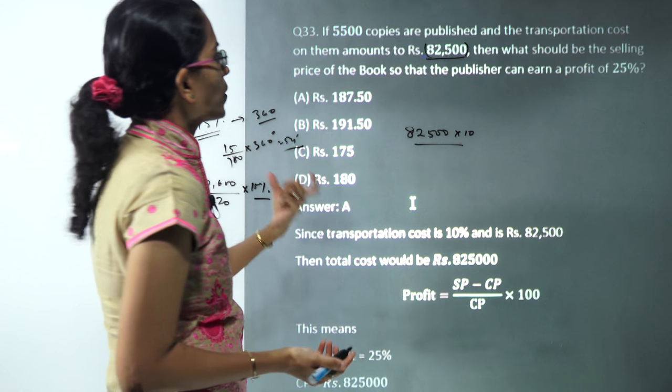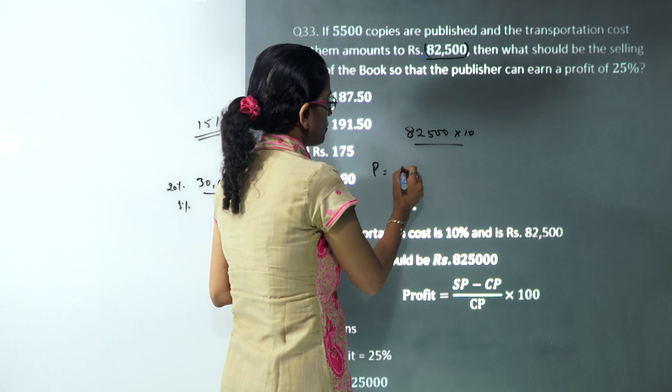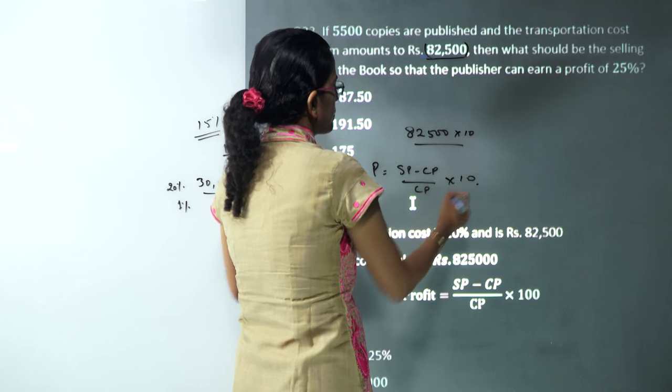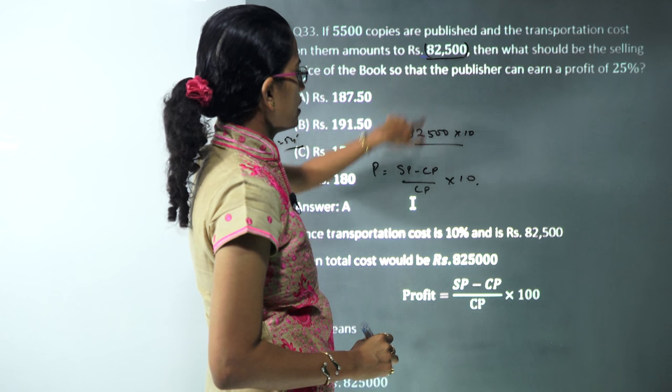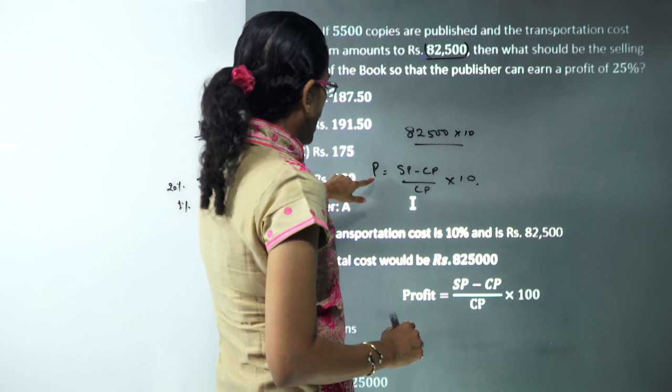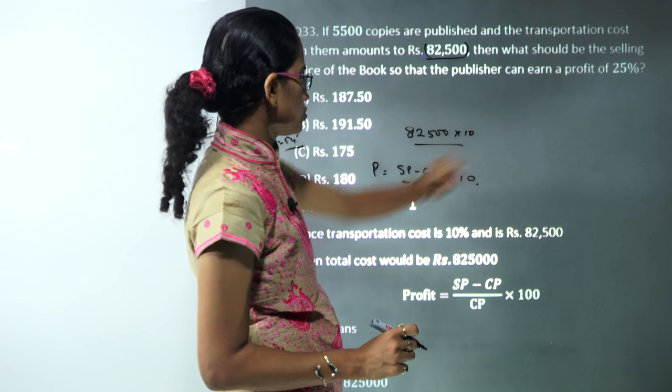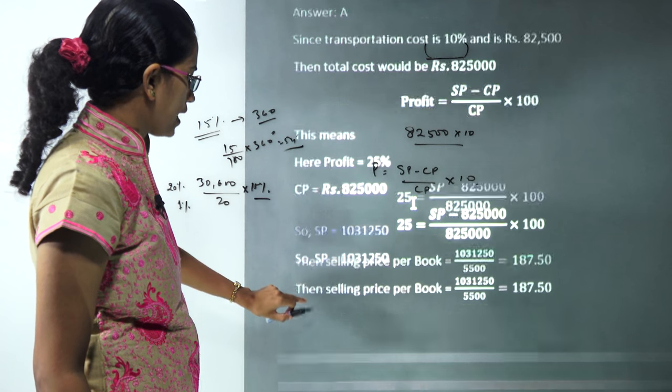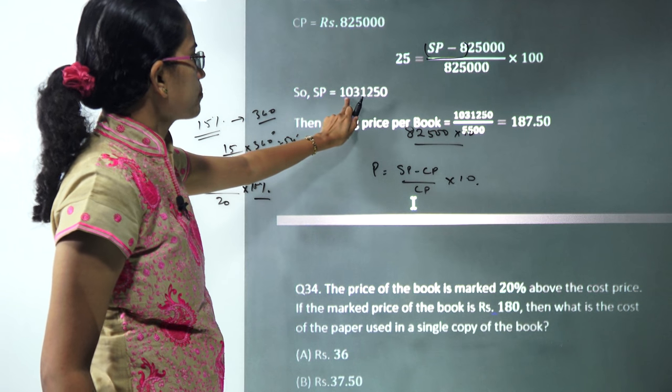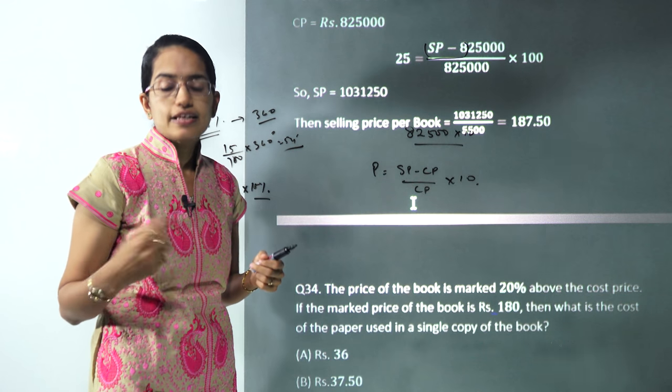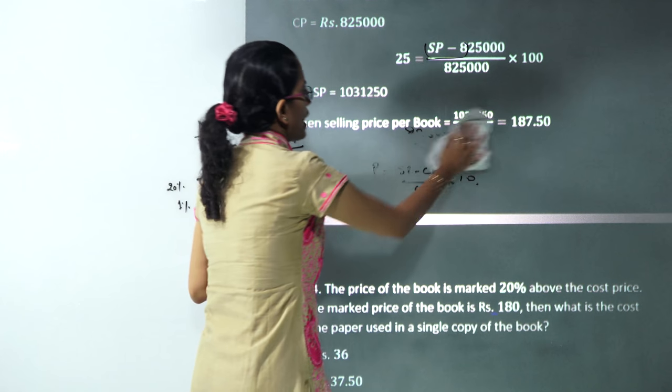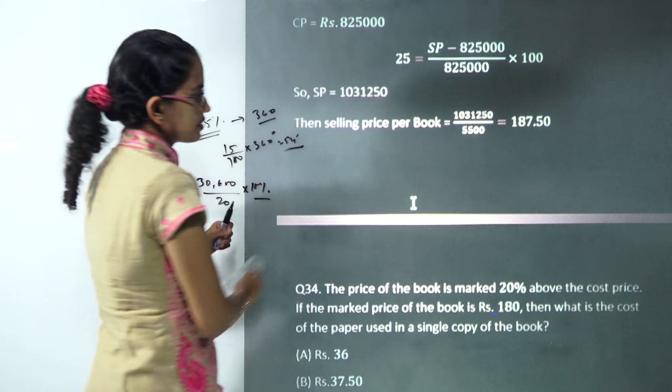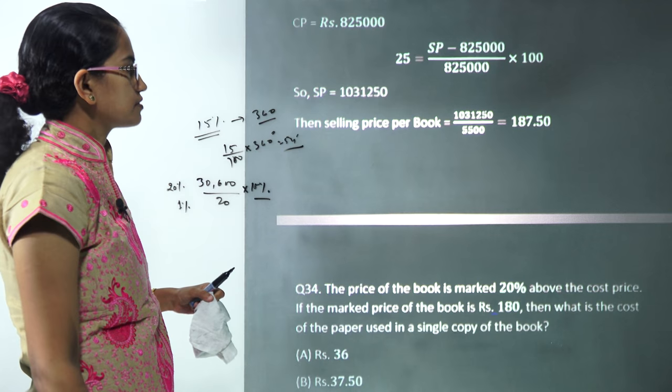So the total cost here would be 82,500 times 10. I can calculate profit equals selling price minus cost price divided by cost price times 100. I know my cost price, and the profit is 25%. Based on this I can calculate the selling price. I have to calculate the selling price per book, so I divide this value by 550 and get the answer as 187.5.